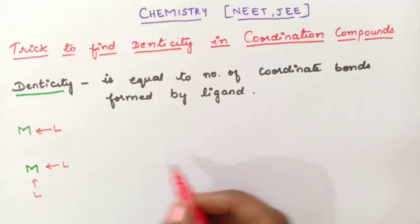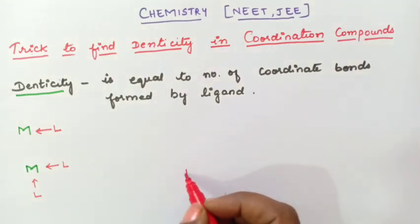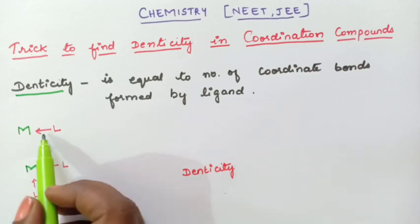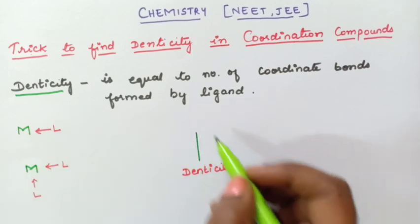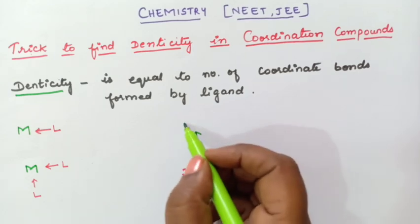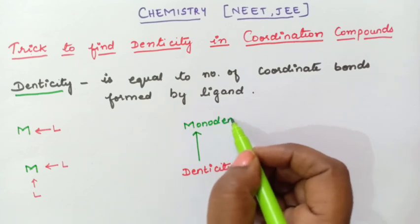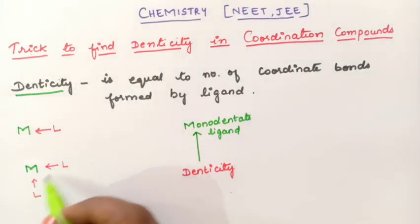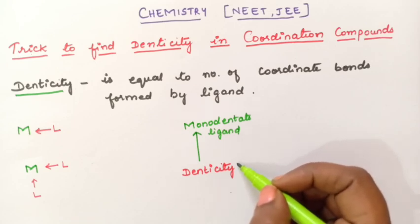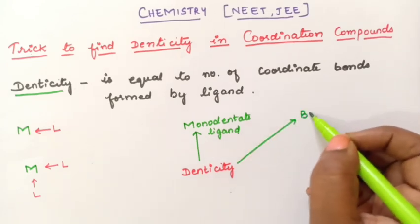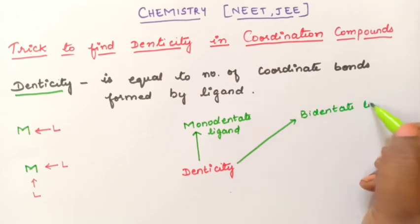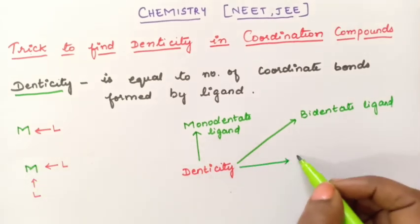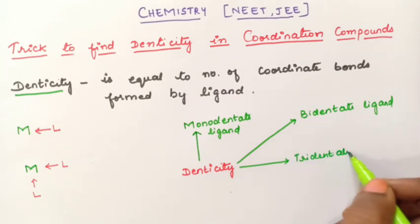Let us see different types of denticity in ligands. If only one coordinate bond is formed, then we call that ligand as monodentate ligand. If two coordinate bonds are present, then we call that ligand as bidentate ligand. And if three are present, then it is called as tridentate ligand.